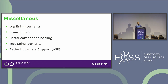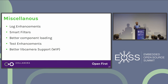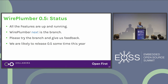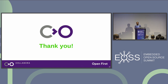We are doing many more things in 0.5: log enhancements, better filter handling, more robust component loading, enhanced tests, and improved libcamera support. The status of WirePlumber 0.5: all features are up and running, there is a branch — please try it and give us feedback. We are likely to release it sometime this year.